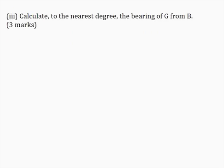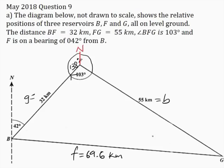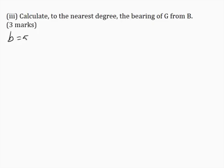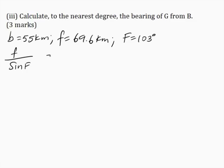Part 3: Calculate to the nearest degree the bearing of G from B for 3 marks. On our diagram, the bearing of G from B is the sum of 42 degrees and angle B. To find angle B, I will use the sine rule because I have an angle and its side, and the side opposite the angle I want to find. So B is equal to 55 kilometers, F is equal to 69.6 kilometers, angle F is equal to 103 degrees. I'll write the sine rule as: F over sine F is equal to B over sine B. I want to make angle B the subject, so I'm going to cross-multiply.